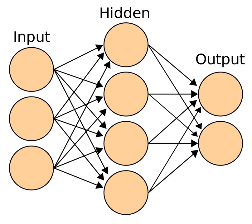The central connectionist principle is that mental phenomena can be described by interconnected networks of simple and often uniform units. The form of the connections and the units can vary from model to model. For example, units in the network could represent neurons, and the connections could represent synapses.